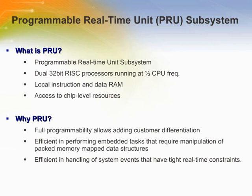The PRU real-time subsystem is a collection of two RISC cores, each with its own instruction and data memory and fast IO. The RISC cores of the PRUSS run at half the ARM/DSP clock frequency and have access to other SOC resources such as external memory, peripheral registers, and system DMA. The PRUSS is fully programmable and can be used to add differentiation to customer products. It is well equipped to perform embedded tasks that require manipulation of packed memory map data structures, and can also efficiently handle system events that have tight real-time constraints.